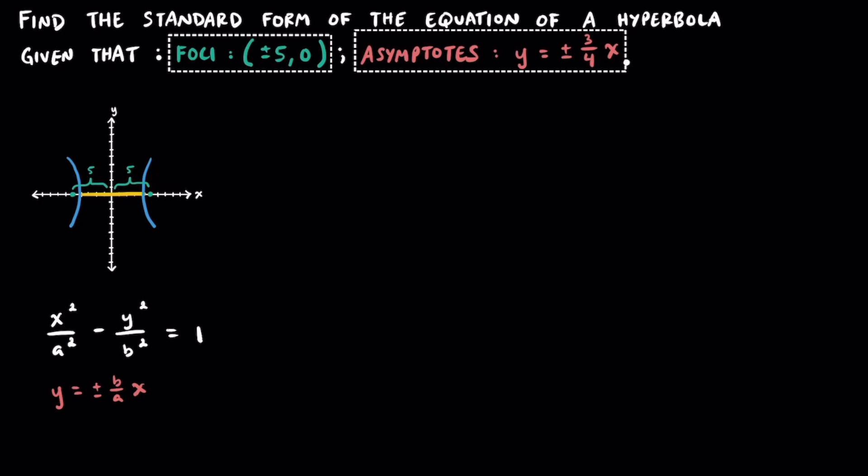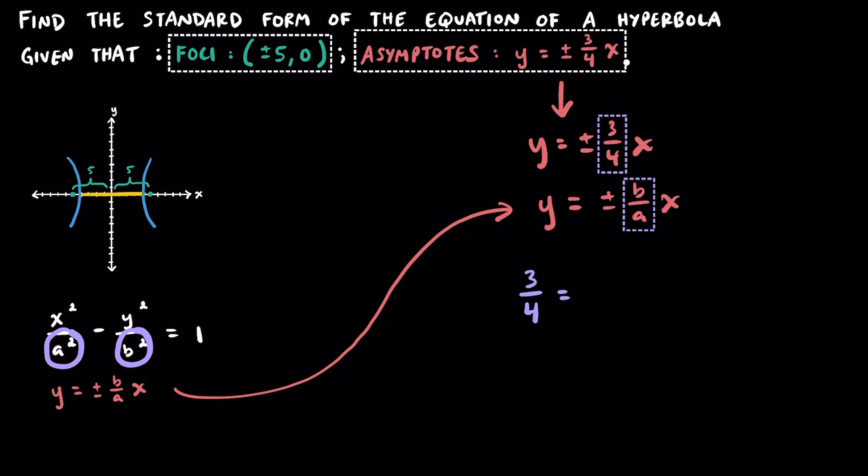So the only thing left to do is to figure out what a and b are. The equation of the asymptotes we were given was y is equal to plus or minus 3 fourths x. And our simplified equation for the asymptotes that we found was equal to y is equal to plus or minus b over a x. Looking at this, we can write the equation that 3 over 4 is equal to b over a. From this, we know that a is equal to 4 and b is equal to 3.